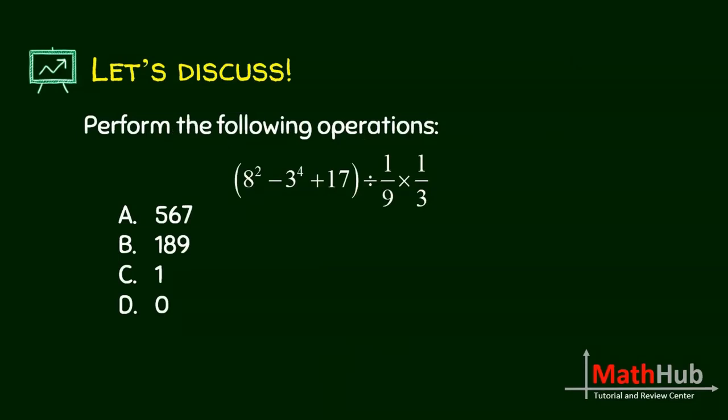Next, perform the following operations. So here, again, we start with parentheses. But inside your parentheses you have exponents. What is 8 squared? 64, that is 8 times 8. What about 3 raised to 4? That's 3 times 3. But here, 3 times 3 is 9, so that is 81 plus 17.